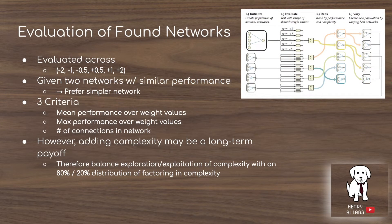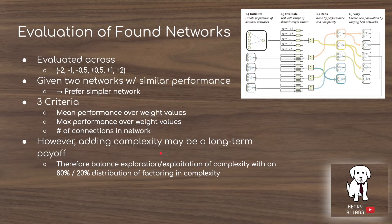In the evolutionary algorithm, there's a technique for evaluating found networks to choose which topologies survive to the next round of evolution and mutation. Networks are evaluated across six different weight values, where each weight in the neural network shares the same value — all minus 2, all minus 1, or all plus 2, for example. They are evaluated on three criteria: mean performance across the set of weight values, maximum performance, and penalized by the number of connections in the network. Adding complexity may be a long-term payoff, so they weight exploration to exploitation with an 80% to 20% ratio — 80% of the time they penalize for the number of connections, but 20% of the time they ignore it completely.